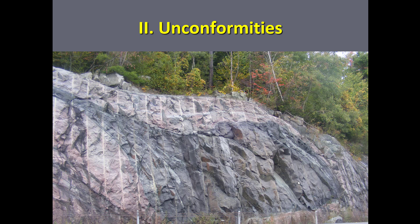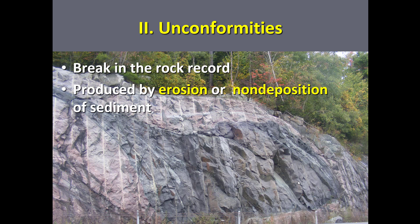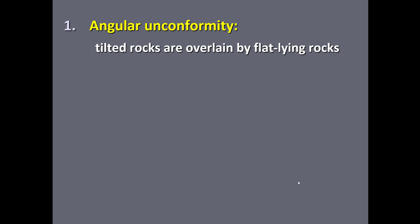One reason geologists don't have all the pages to that story is because of unconformities — breaks or gaps in the rock record, typically due to erosion or non-deposition, where sediment is routed somewhere else. There are three main types of unconformities, three ways that rock can be missing from the rock record, and we have to acknowledge them as part of telling the geologic story of an area. The first is called an angular unconformity.